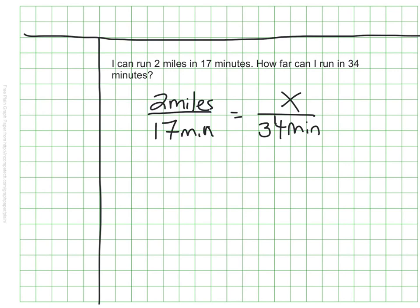And of course we know what to do from there. I know that 17 was doubled to make 34, so I'm going to double the number of miles I can go as well, and that will tell me what my missing value is.